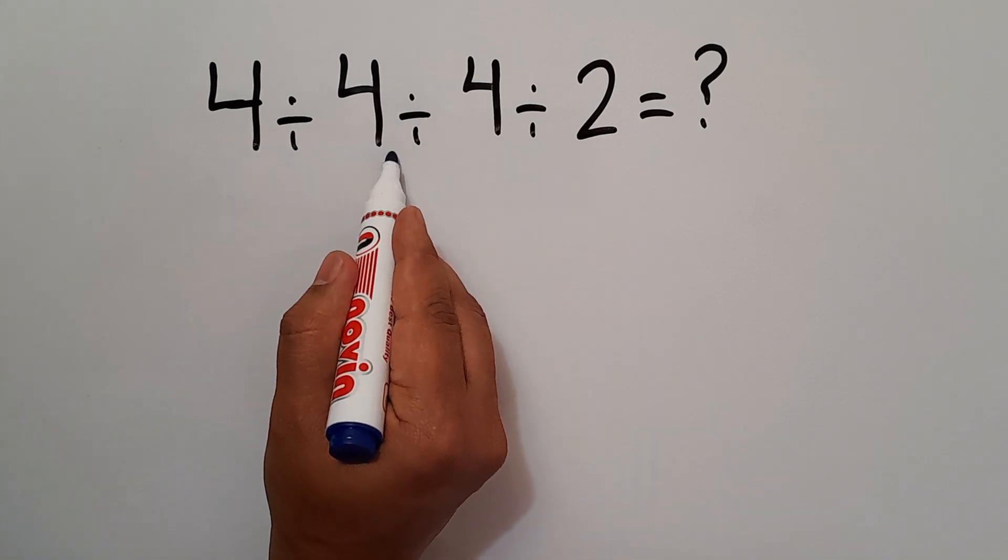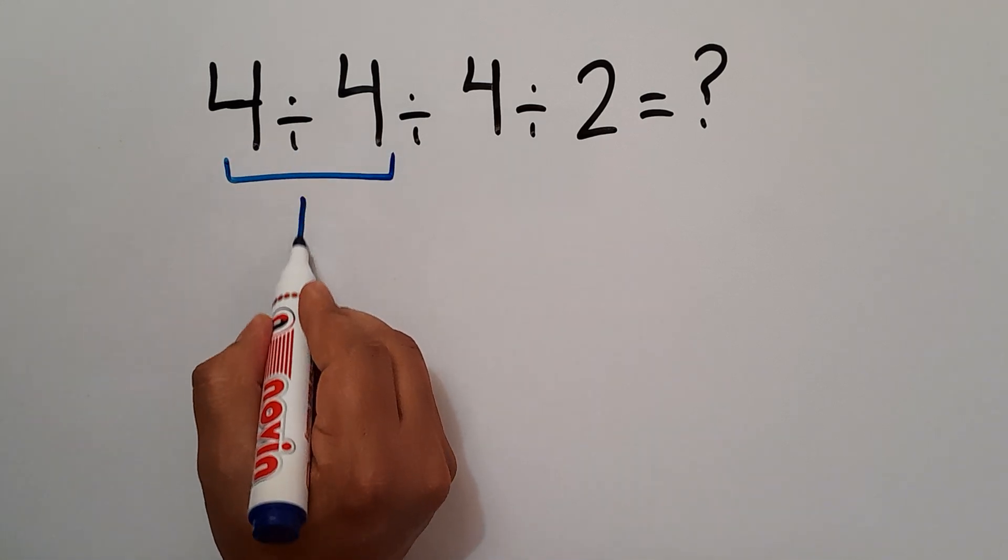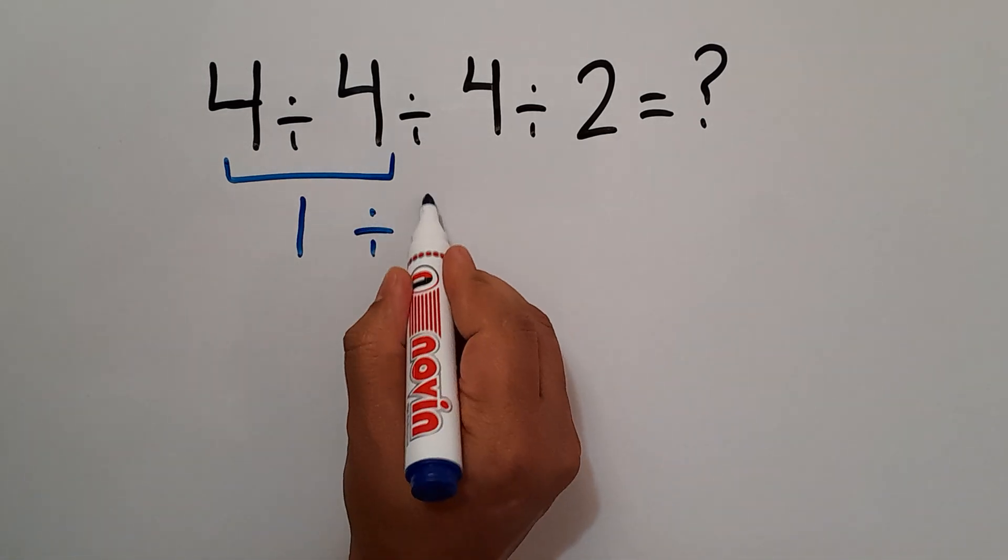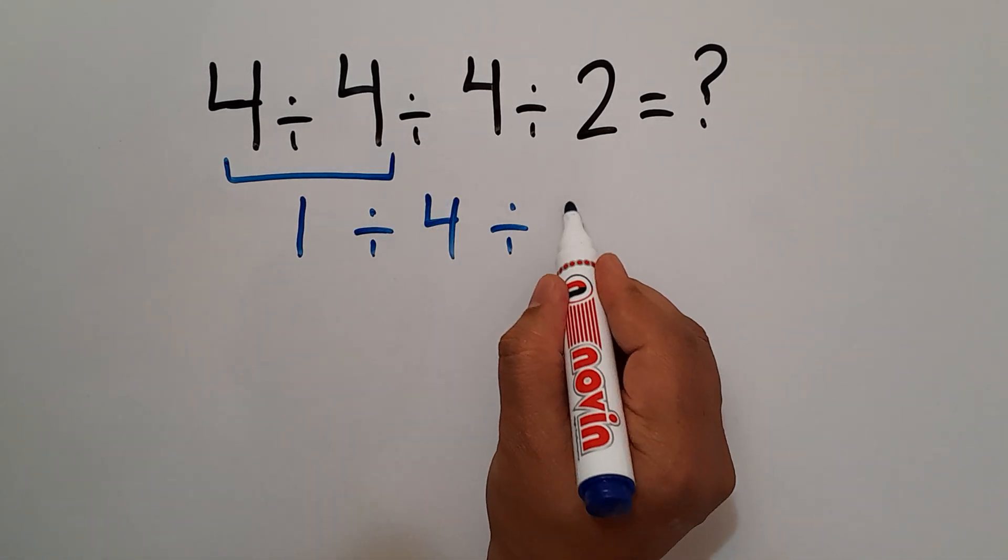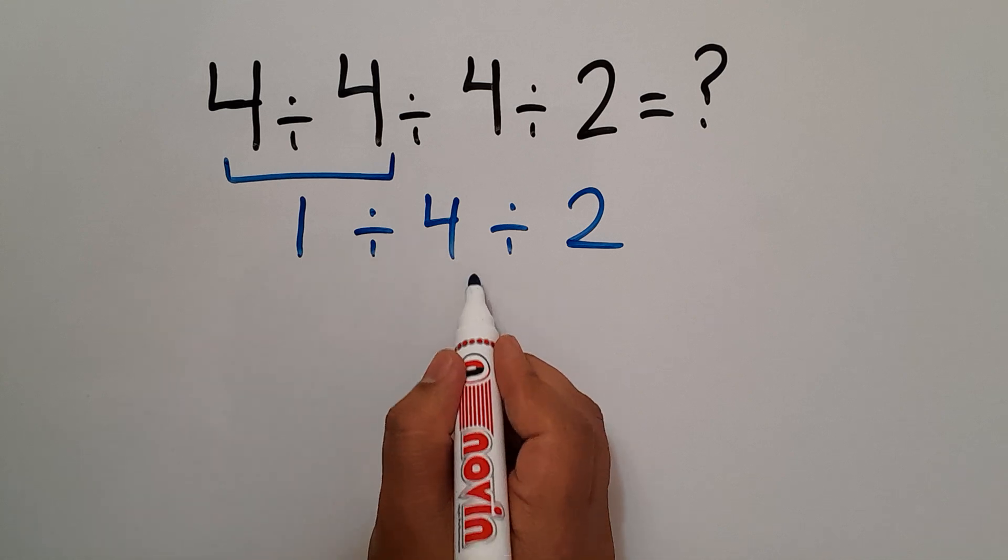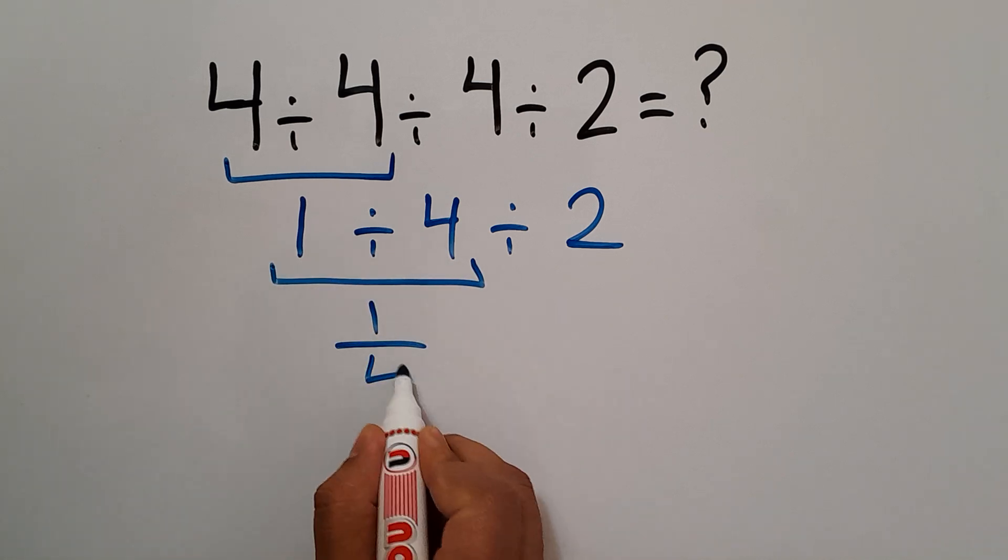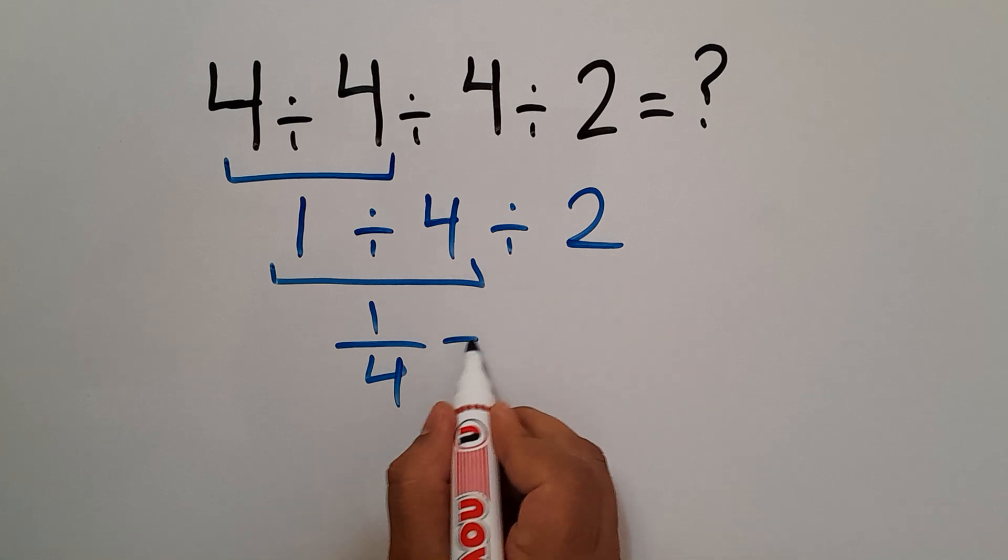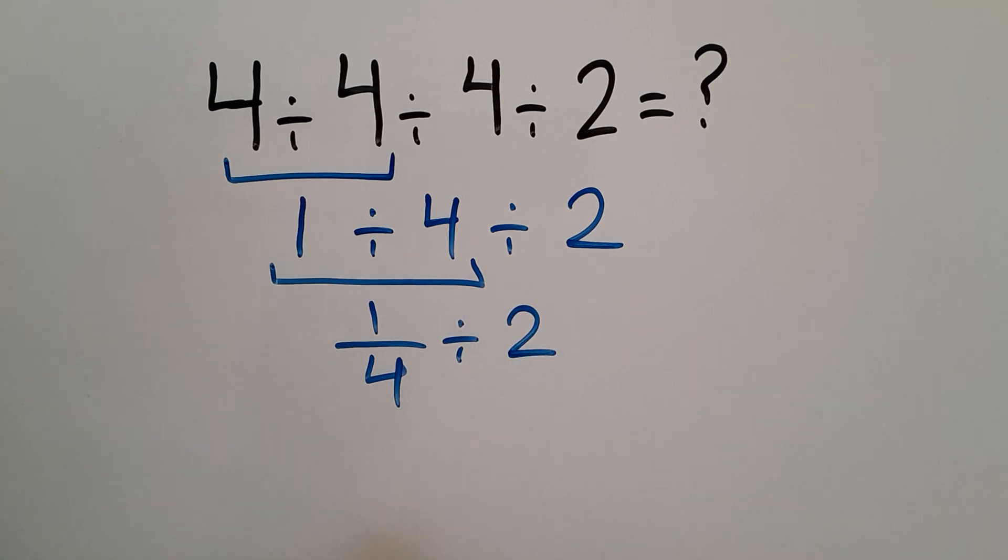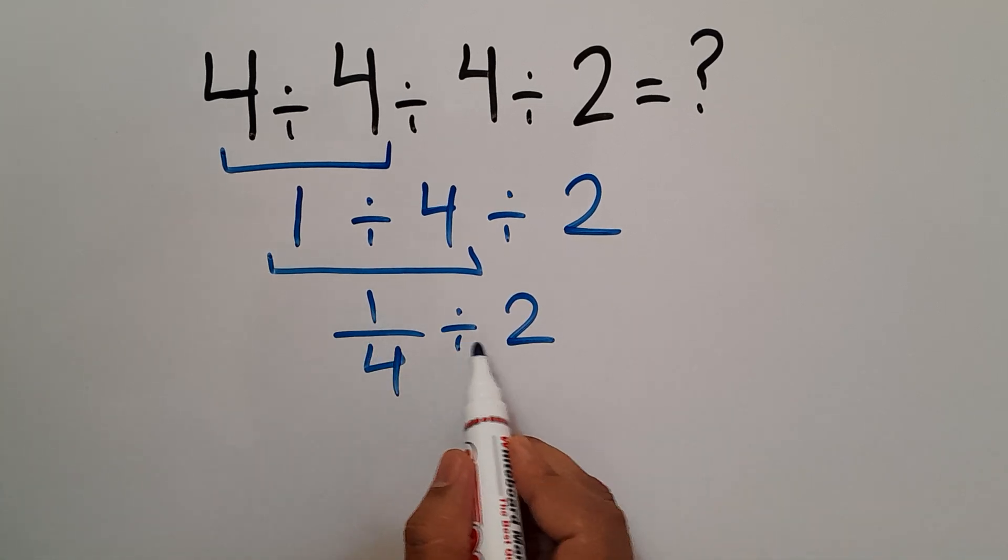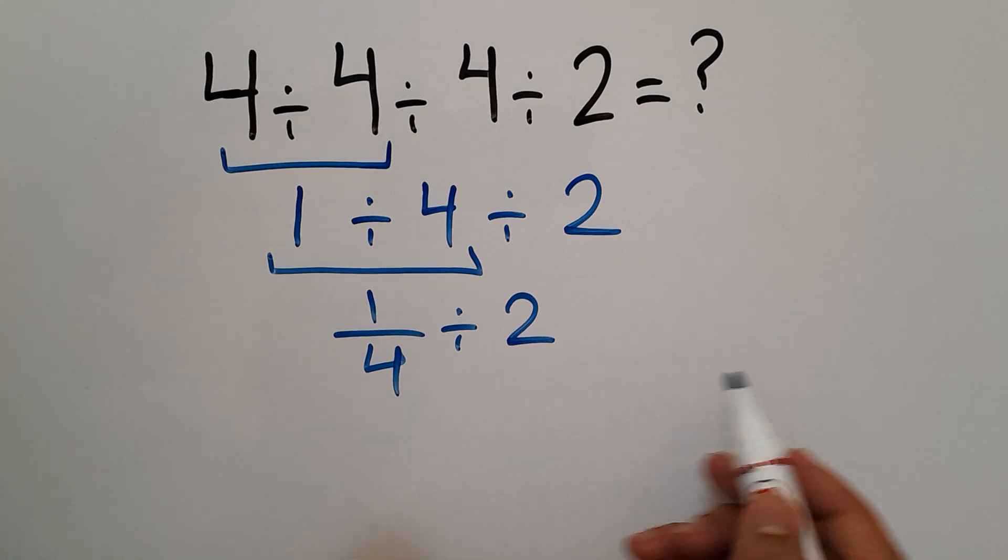4 divided by 4 gives us 1. So 1 divided by 4 divided by 2. 1 divided by 4 we can write as 1 over 4, then divided by 2. So we have 1 over 4 divided by 2.